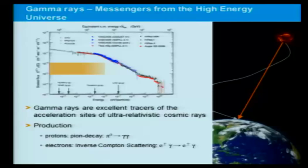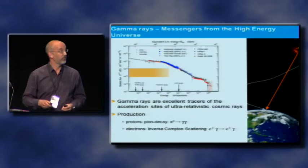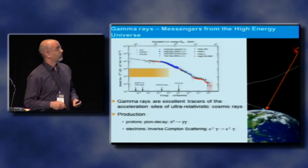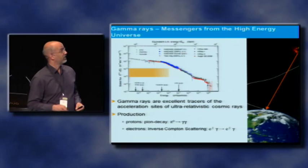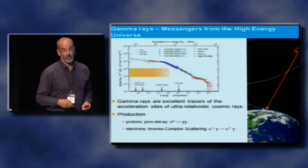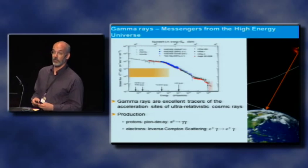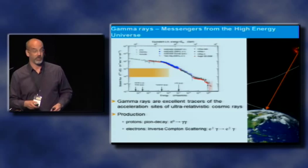I will briefly touch on gamma-ray astronomy: the motivation, where we actually are, and what this picture is all about. Let me start first with a brief motivation. I think we heard it already before — there is this spectrum of cosmic rays, of charged particles hitting the Earth's atmosphere from all sides, which we know now since more than 100 years, and we are still puzzling where these particles are coming from.